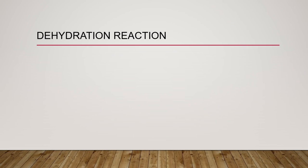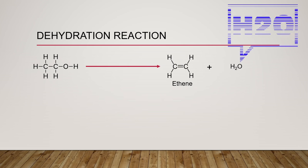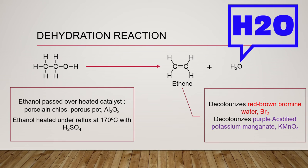Ethanol also undergoes dehydration reaction, which involves the removal of water molecules. The alcohol molecule is changed to an alkene, so this reaction is used to make alkenes from alcohols. In the laboratory, this can be carried out by passing ethanol vapor over heated catalysts such as porcelain chips or aluminum oxide.